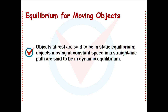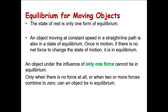Equilibrium for moving objects. Being at rest is just one form of equilibrium. An object moving at constant speed in a straight line path is also in a state of equilibrium. Once in motion, if the net force is zero, the object will keep the same state of motion — moving with the same speed without changing direction. Equilibrium occurs when two or more forces combine to give a net force of zero.